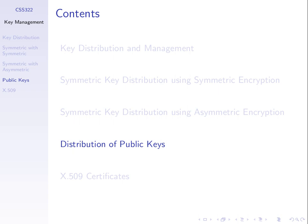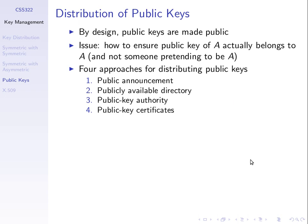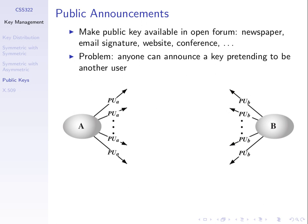So how do we distribute public keys? One approach is to just make a public announcement — post your key on a website, at the bottom of your email, print it in a newspaper. But the problem is we can't be sure the public key belongs to the person who claims it does. It could be someone pretending it's Steve's public key when it's actually someone else's.